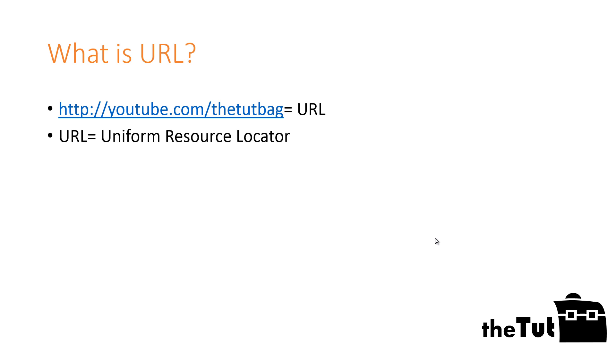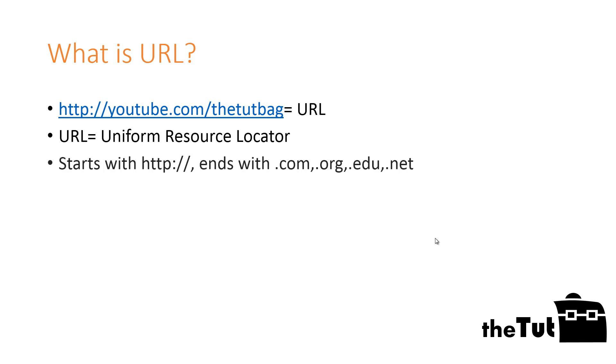What is a URL? Consider the example: http://youtube.com/thetootbag. The web address of any website is known as the Uniform Resource Locator, also referenced by its acronym URL. URLs start with http, and they usually end with .com, .org, .edu, or .net with several variations. Every website has a URL.